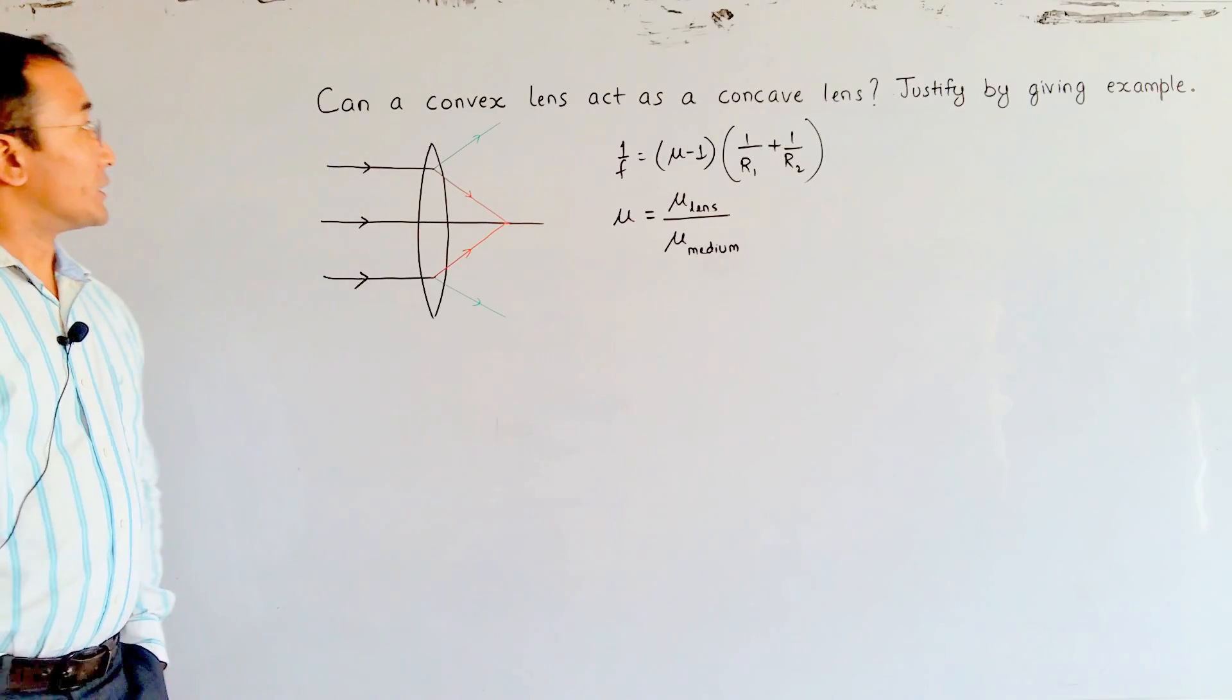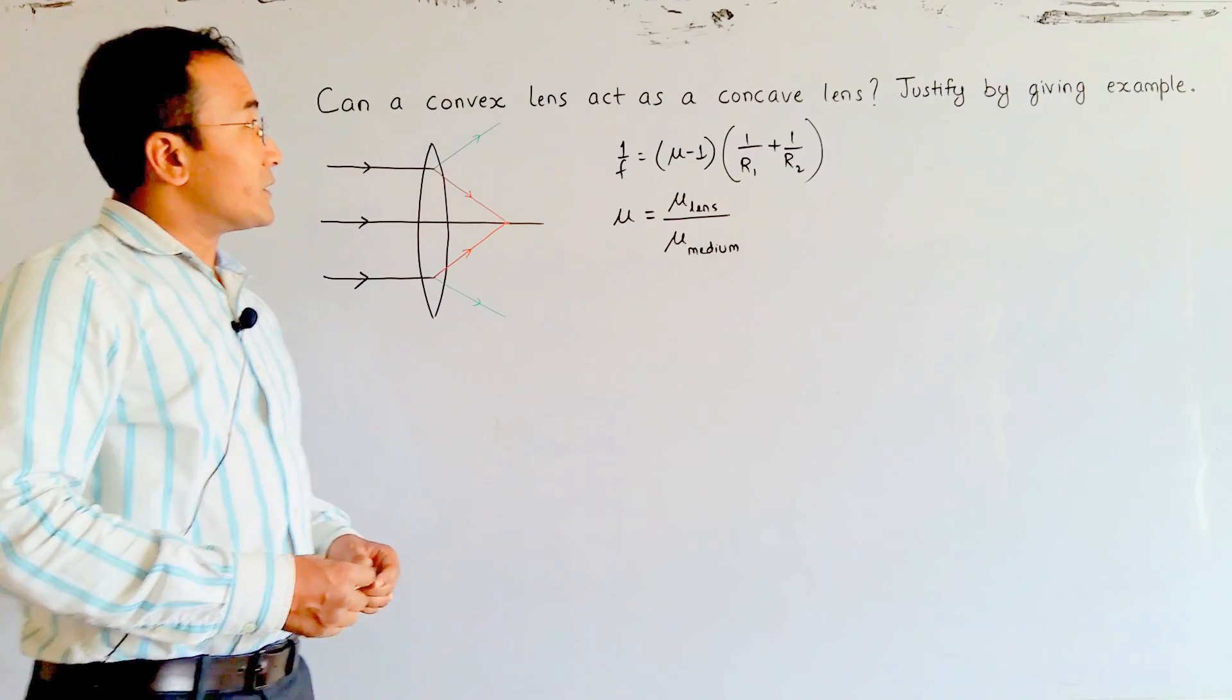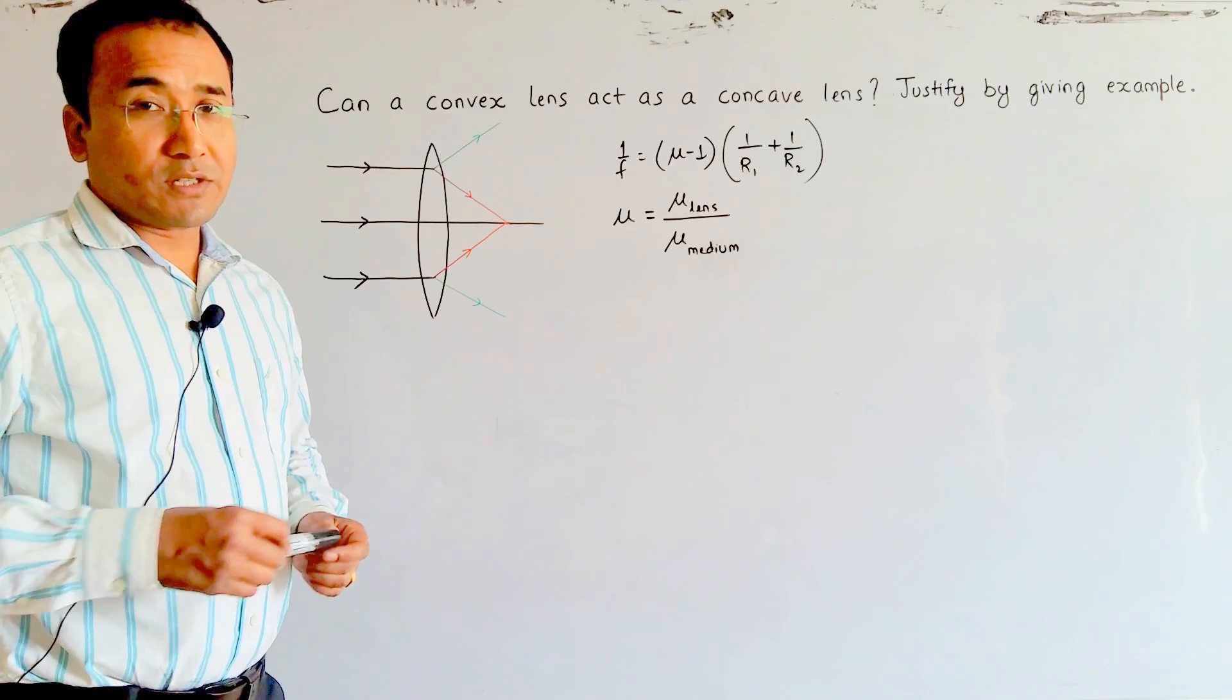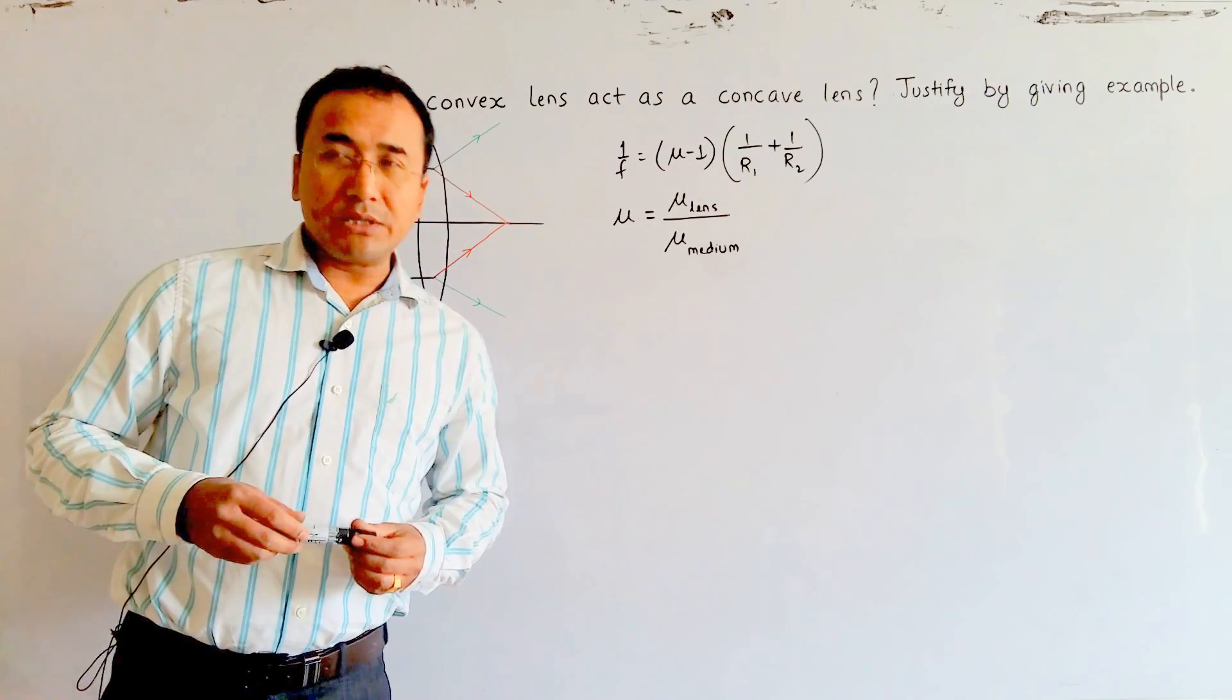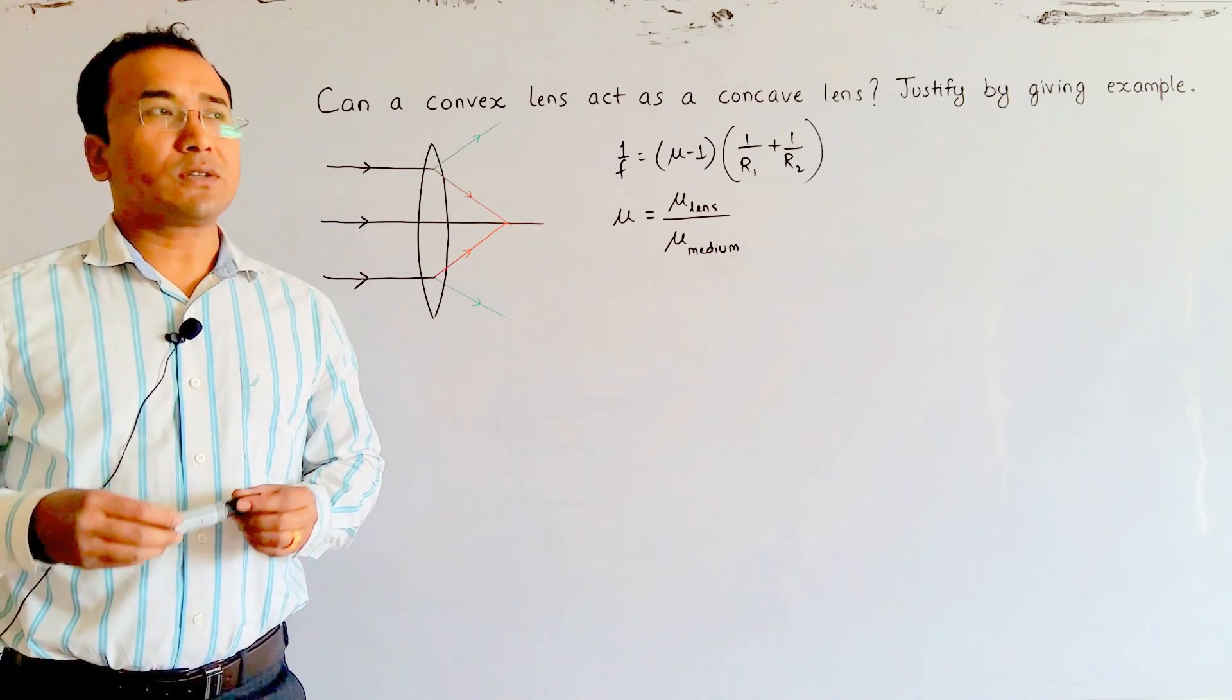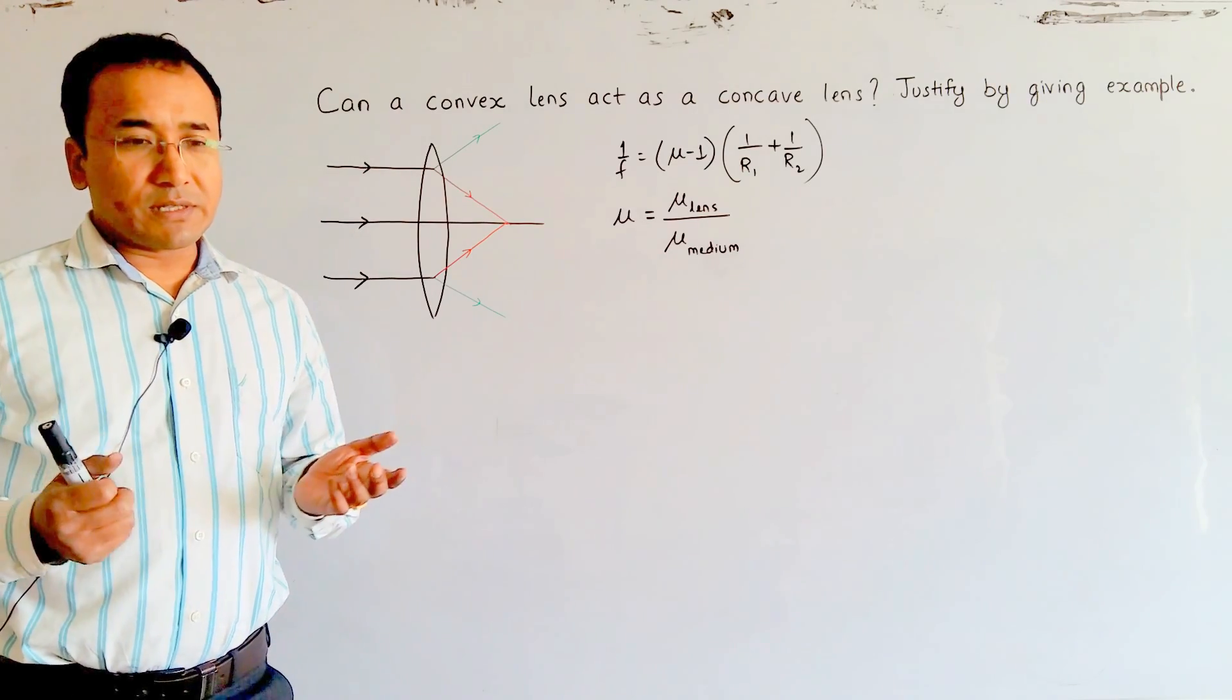The question for today is: can a convex lens act as a concave lens? We have to justify this by giving an example. During our initial days in school, we are taught that a convex lens is something that is bulged in the middle and narrow at the edges.